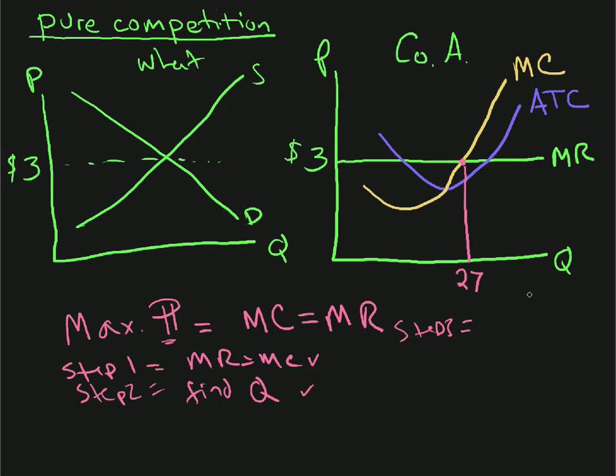What is step three? Step three is calculating out our actual profits or losses. We know how to do that. How much does it cost to produce 27 units of wheat? You don't go up to the marginal cost line because that gives you how much it costs to produce the 27th unit.